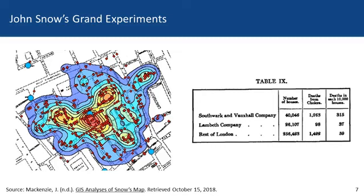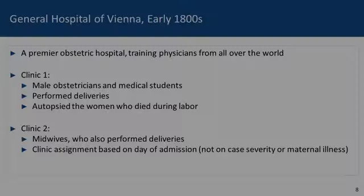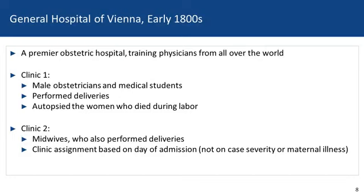This work by Dr. John Snow really established what we now consider the basic science of epidemiology. Around the same time, we move to the General Hospital of Vienna to see another example of epidemiology in action. The General Hospital of Vienna was a premier obstetric hospital that trained physicians from all over the world.